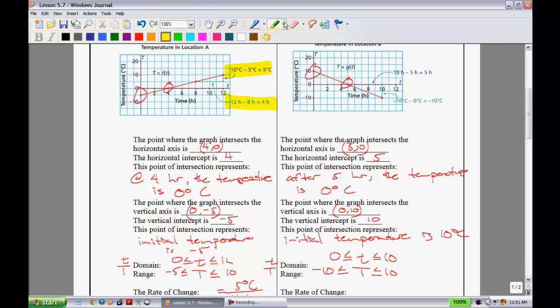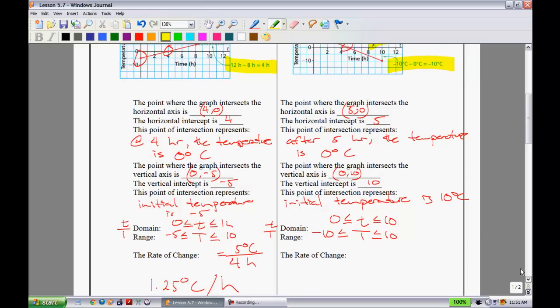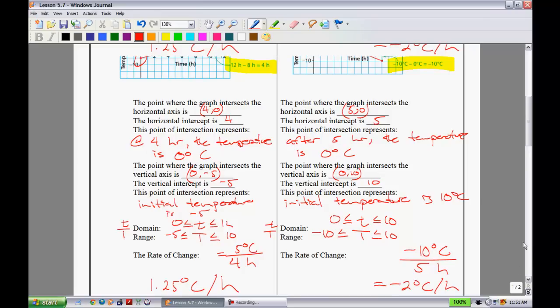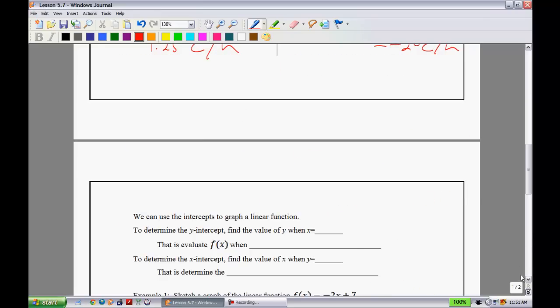Now the rate of change—they have done that calculation nicely right here for us. We can see that over the course of 5 hours the temperature has gone down 10 degrees. So we will take our dependent goes first. So we have -10 degrees Celsius over 5 hours. And we divide that, we end up getting -2 degrees Celsius per hour. So that's how much the temperature is dropping by.